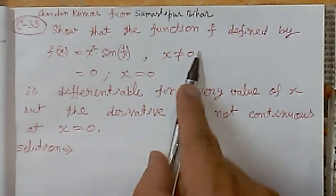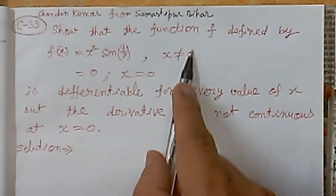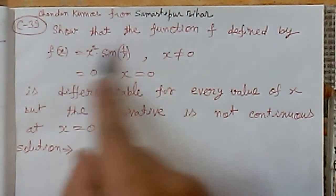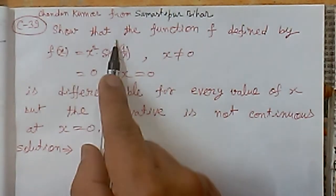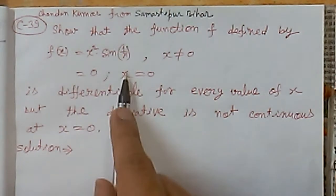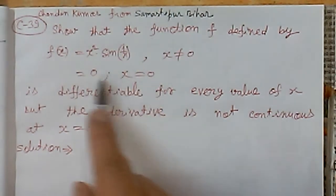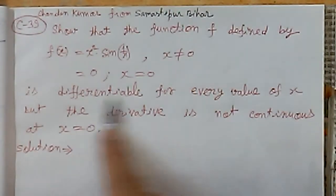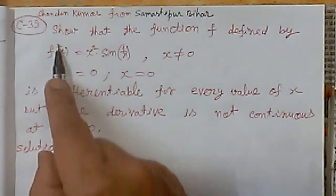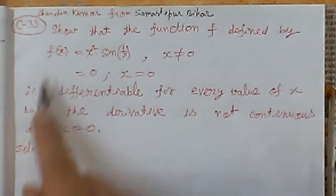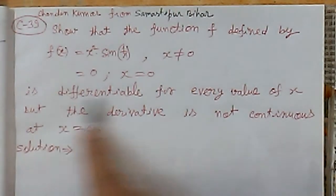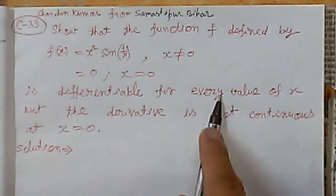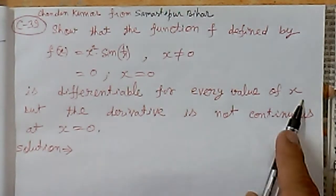When x is not equal to 0, we consider one form of the function, and when x = 0, we consider another. We need to show that this function f(x) is differentiable for every value of x.